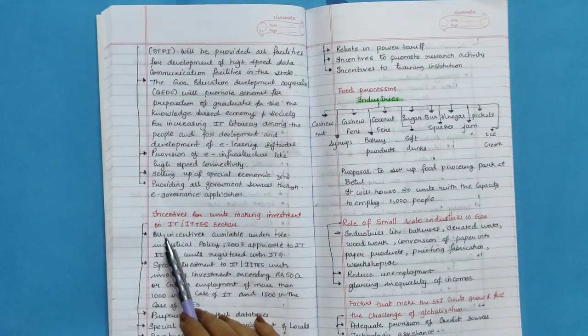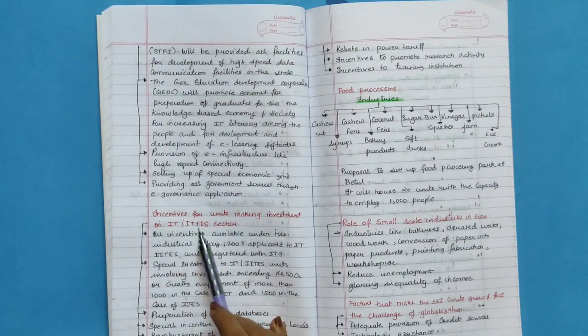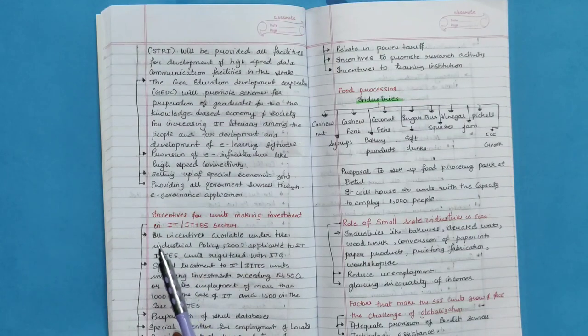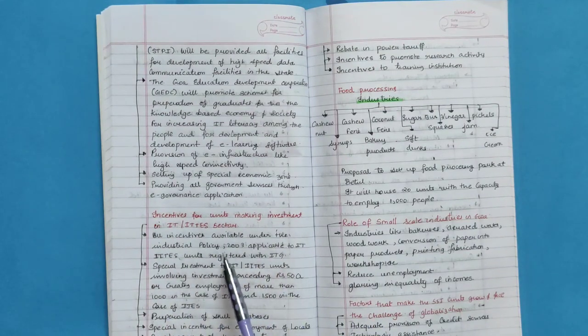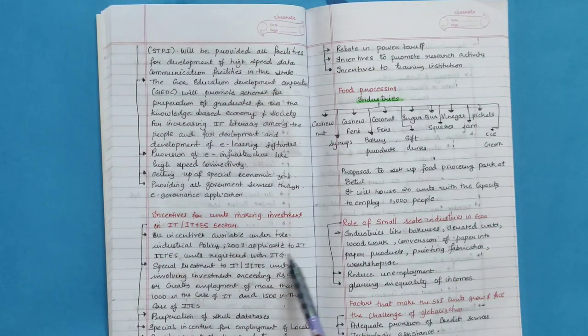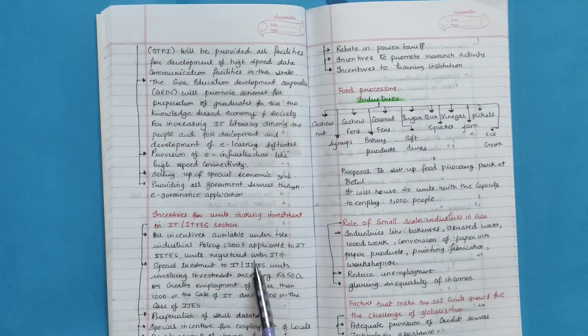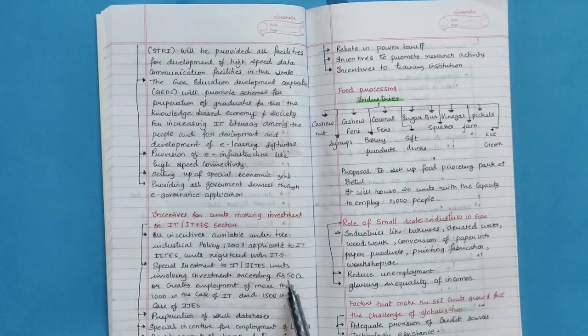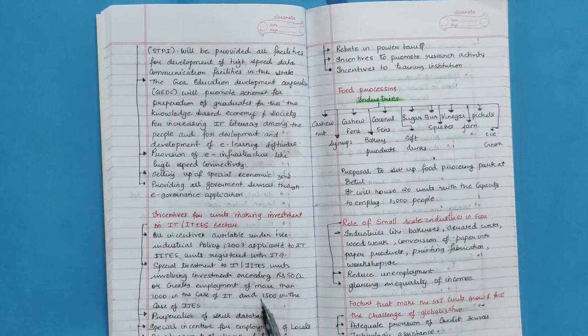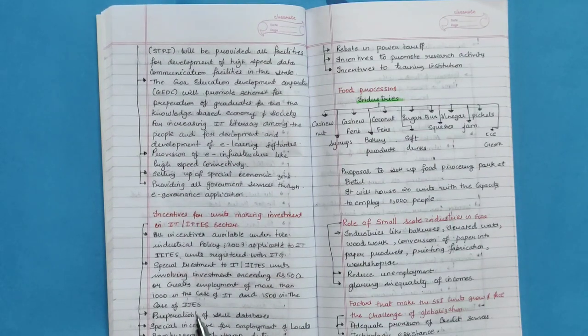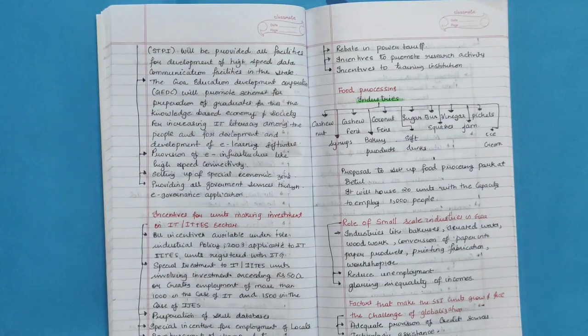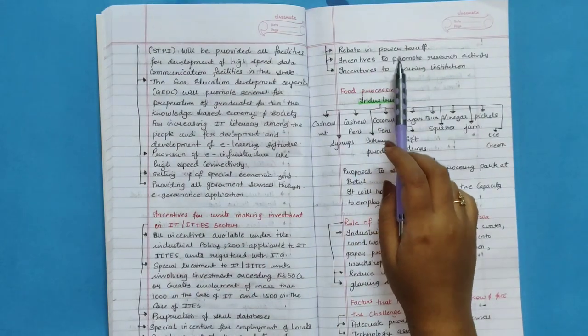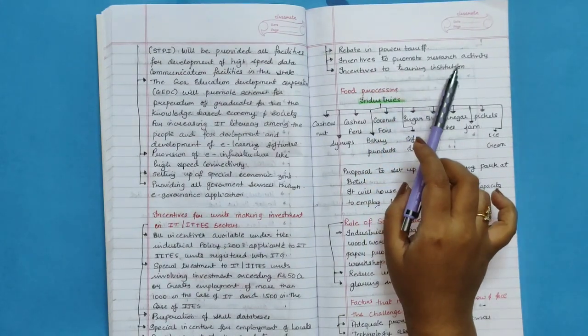Incentives for unit making investment in IT or IT-ITES sector. All incentives available under the Industrial Policy 2003 applicable to IT-ITES units registered with IT. Special treatment to IT-ITES unit involving investment exceeding Rs. 500 or creating employment of more than 1,000 in the case of IT and 1,500 in the case of ITES. Preparation of skill database, special incentive for employment of locals, reimbursement of stamp duty, rebate in power tariffs, incentives to promote research activity, incentives to training institutions.